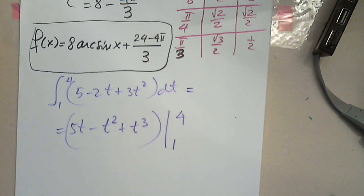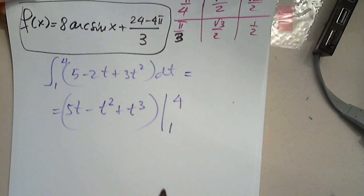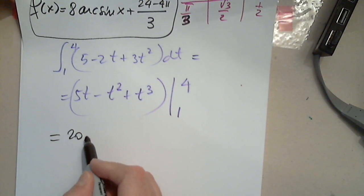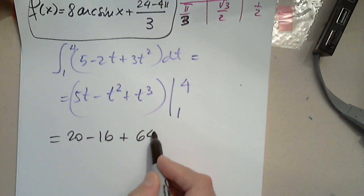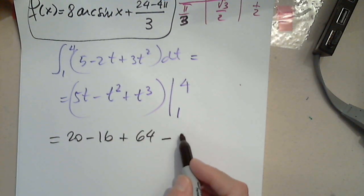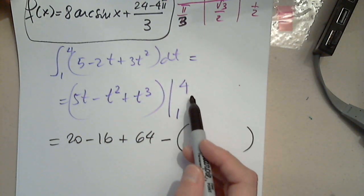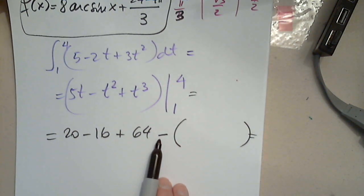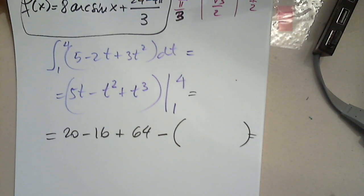Now all I have to do is plug in 4 and subtract when I plug in 1. When I plug in 4, I have 20 minus 16 plus 64, minus the value when I plug in 1. It's safe to put parentheses because you may forget to distribute the negative sign.